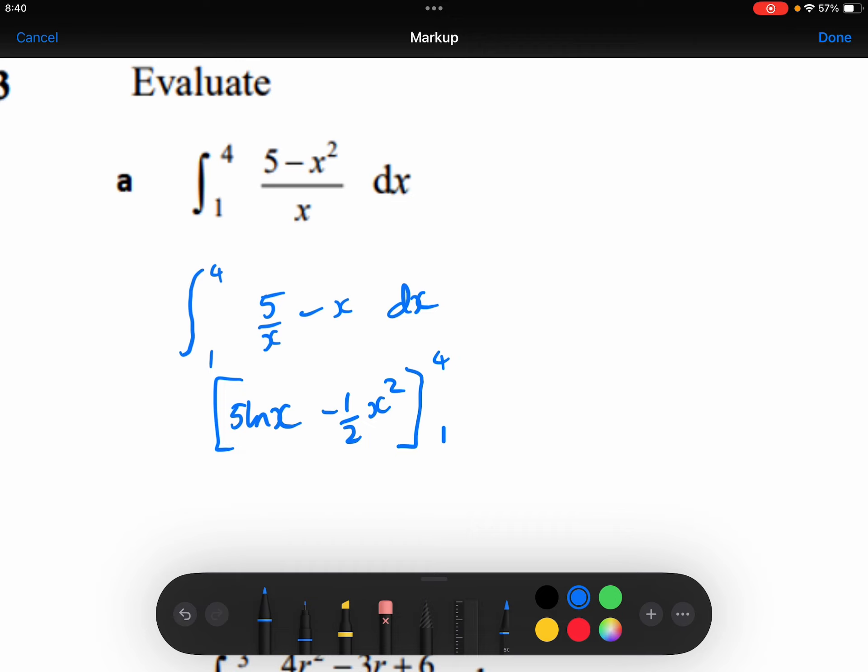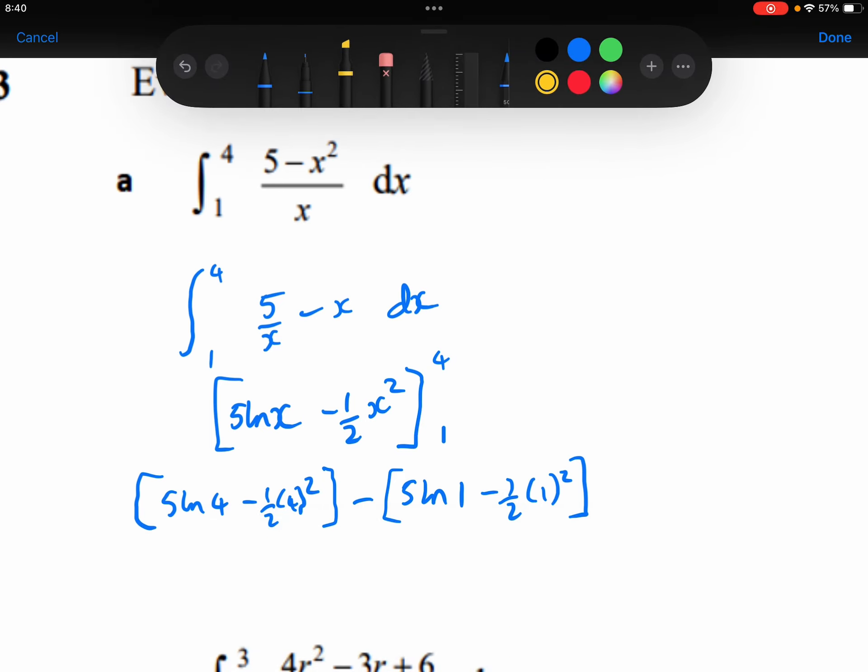The upper limit, substitute that in, so we'll get 5 ln 4 minus 1 half 4 squared. Substitute the lower limit in, we'll get 5 ln 1 minus 1 half times 1 squared. The 4 squared is 16, half of that is 8.